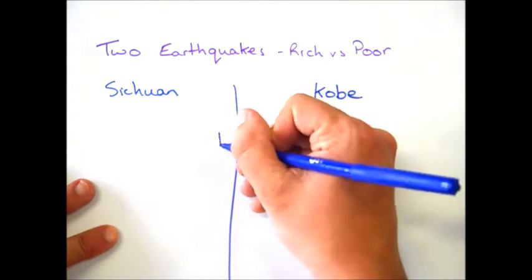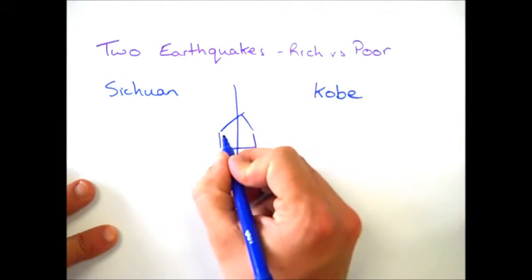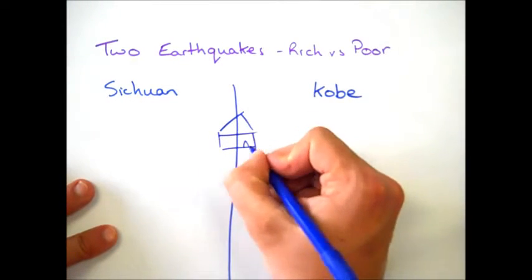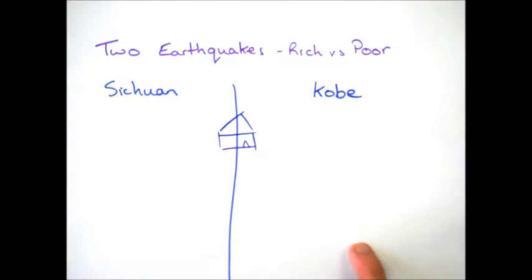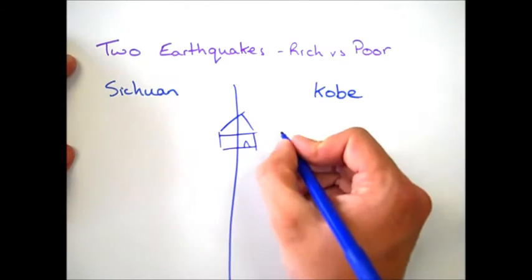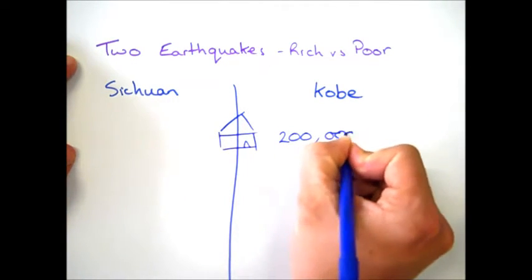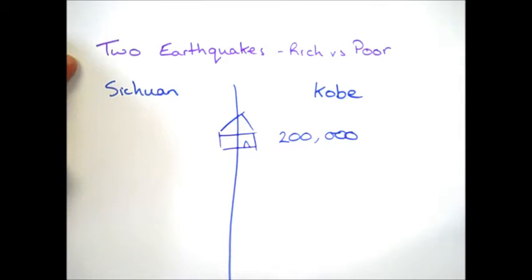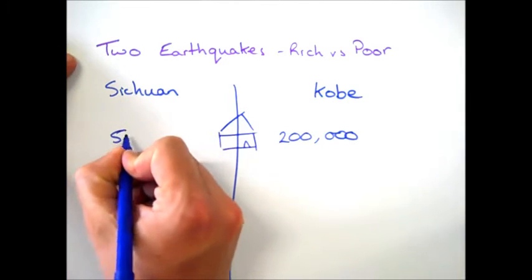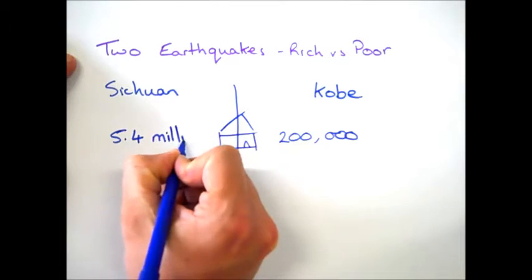Obviously, the primary thing we need to think about with earthquakes is the amount of buildings that are destroyed. Kobe is a rich, wealthy country, therefore its buildings were built from well-constructed designs using good quality materials, and many would have been designed to be earthquake-proof. So despite the size of the earthquake, we saw around 200,000 buildings destroyed. Comparing that to Sichuan, obviously a much poorer part of the world, with poor quality construction, not particularly good materials, and very few earthquake-proof buildings, we saw a much higher number — somewhere in the region of 5.4 million buildings destroyed.